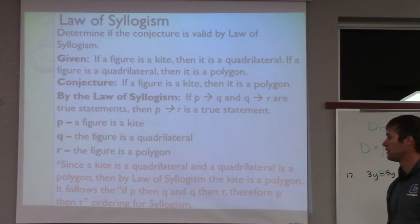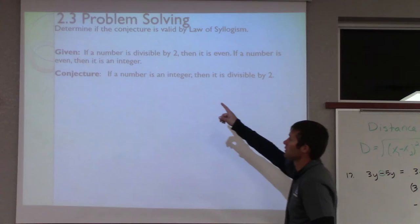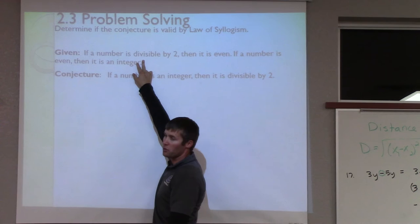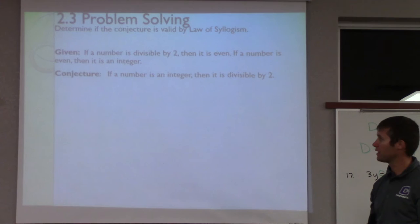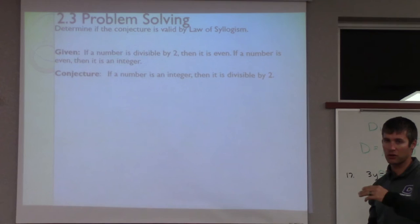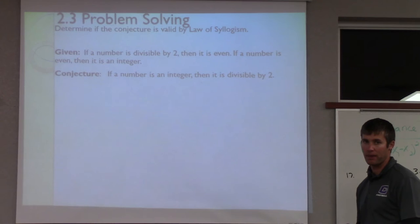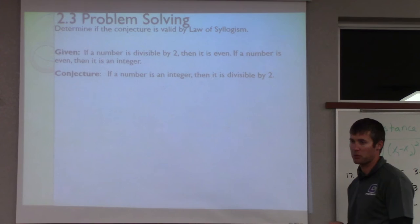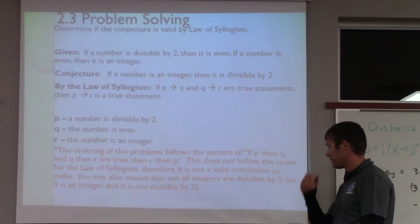If a number is divisible by two, then it is even. If a number is even, then it is an integer. So the conjecture: if a number is divisible by two, then it is an integer. To apply the law of syllogism, you start with the first statement and end with the last. An integer is just any positive, negative, or whole number — like negative three, negative two, negative one, zero, one, two, and so on. Is it always true that if a number is an integer, it is divisible by two? What about one, or three, or five, or negative seven? Any odd number wouldn't work with this conclusion, so the problem is false — we can't conclude this.